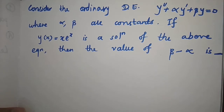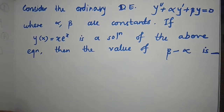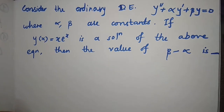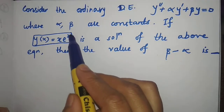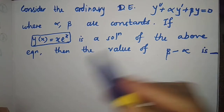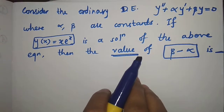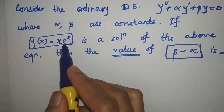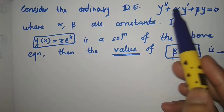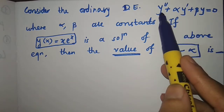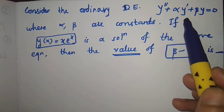Now let us solve another question. The question gives the ordinary differential equation y double dash plus alpha times y dash plus beta times y equal to 0, where alpha and beta are constants. The solution given is y equal to x into e raised to x, and we have to find out the value of beta minus alpha. We know that this y should satisfy the given differential equation, so just calculate y dash and y double dash.